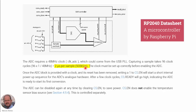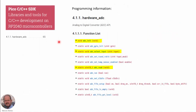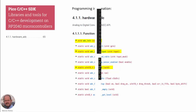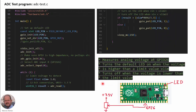To program the ADC we need to know the available functions. In the Pico C/C++ SDK, section 4.1.1, Hardware ADC, we can consult all the functions. Today we are going to use only: the initialization, the selection of the input, and the reading of a value at the analog input.